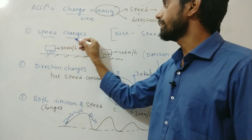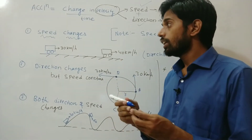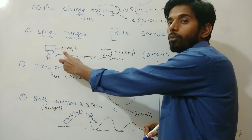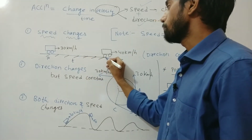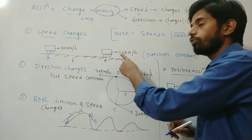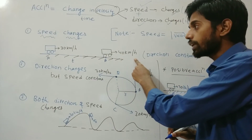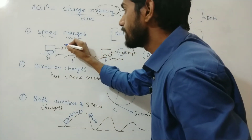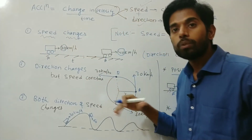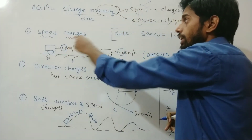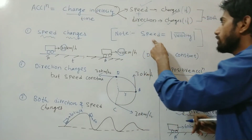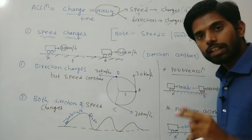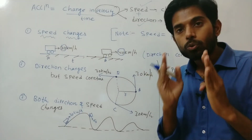Here are some examples. First, speed is changing: at point A this vehicle has a speed of 30 km/h, and after time t it reaches point B and attains a velocity of 40 km/h. The magnitude is increasing with no change in direction — hence only speed is changing. Remember: speed is equal to the magnitude of velocity.